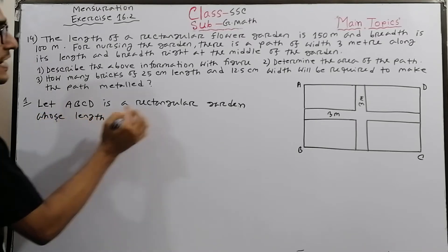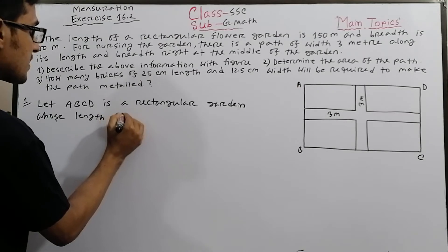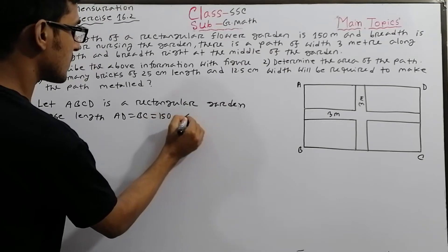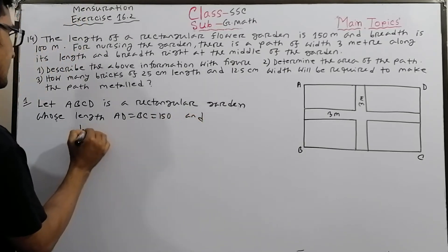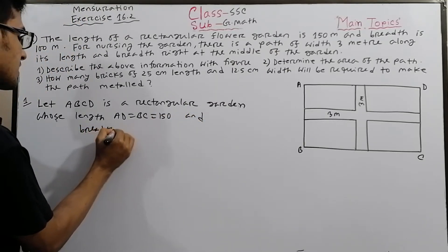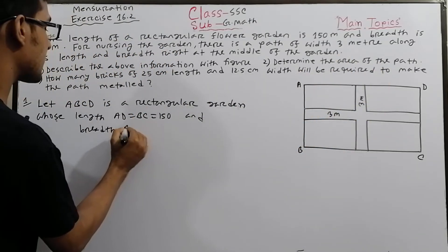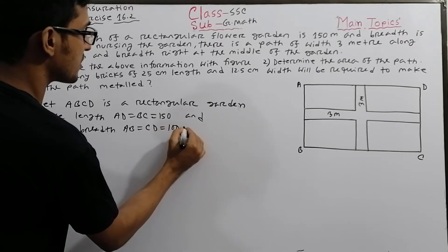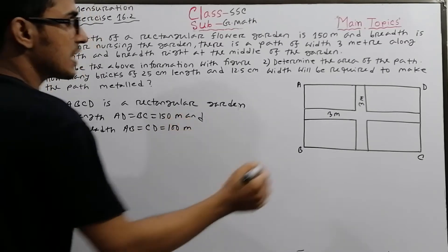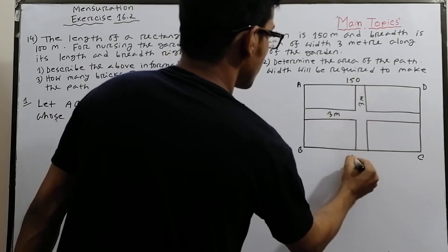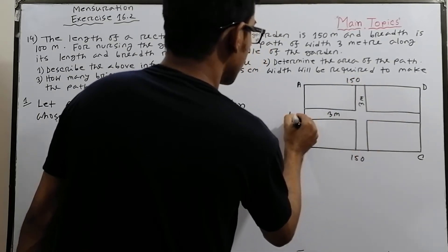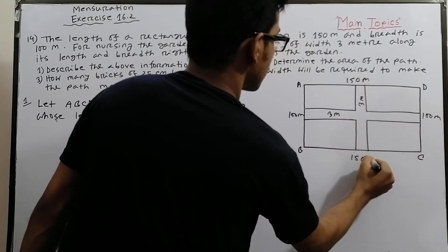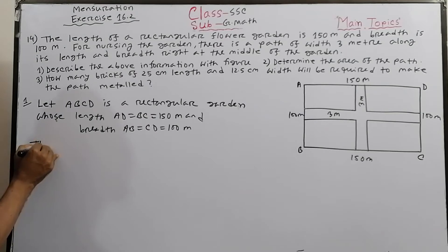The length: AD equal to BC equal to 150 meters. AD equal to CD equal to 100 meters. So the figure shows length of 150 meters and breadth of 100 meters.